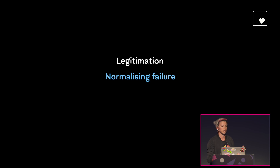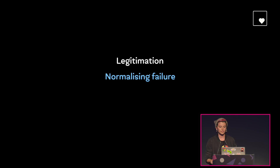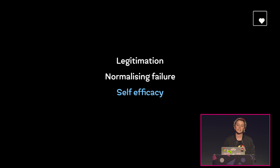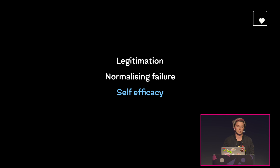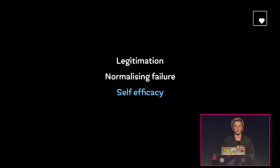These two learner-focused strategies — legitimation and normalising failure — work together really well to make it easier for all of us to persevere when we're faced with problems we don't know how to solve. Next up we've got self-efficacy: supporting people's belief in their own ability to succeed. A study was conducted in 2012 into first-year university students' perceptions of their own coding abilities when they were learning how to program. The TLDR is that if they didn't believe in their own ability to succeed — even if they made a lot of mistakes along the way — both their performance and their mental wellbeing decreased dramatically.